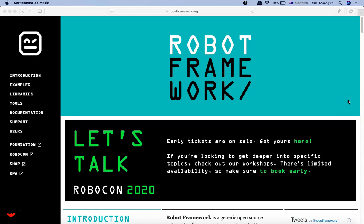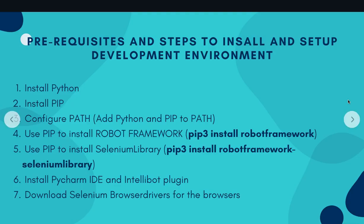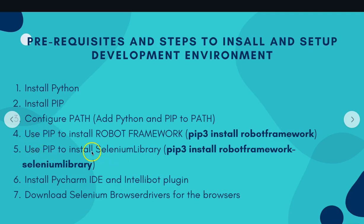Hello and welcome to the Robot Framework tutorial. In this tutorial we are going to cover the installation of PyCharm IDE and the IntelliBot plugin, and then download and install the Selenium browser drivers so that you can execute your robot script on the desired browser. In the previous two tutorials we covered installing Python, pip, configuring the path, and installing the Robot Framework and Selenium library. So now let's get started.